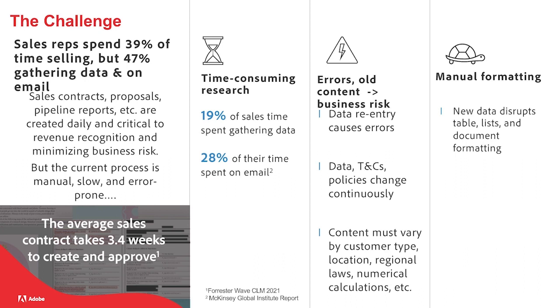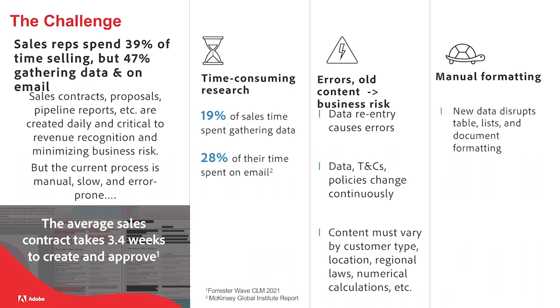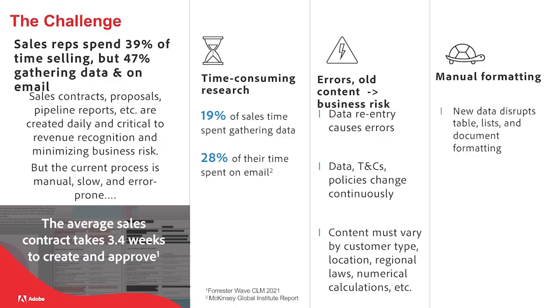The process of creating sales documents is painfully slow and very error prone. According to Forrester, it takes an average of three to four weeks to create and approve the average sales contract — and that's just one example. Sales reps have to create a whole host of document types including quotes, proposals, invoices, statements of work, change orders, and more. Because that data changes very frequently, reps spend about 47% of their time researching data, sending emails to get content approved, and reformatting documents. Even after all that work, errors happen that can increase business risk — and all this time the clock is ticking in a sales environment where the early contract often wins the deal.